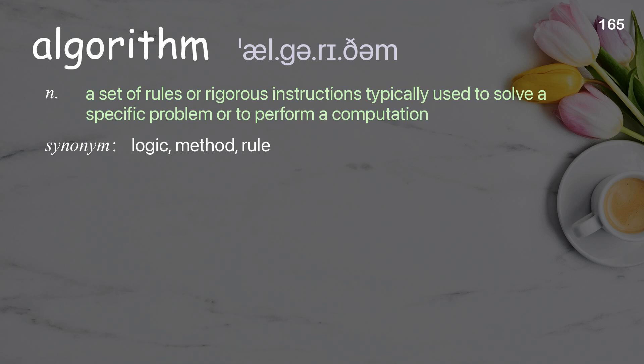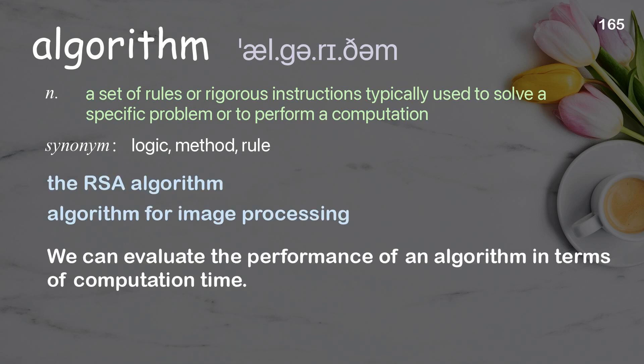Algorithm: a set of rules or rigorous instructions typically used to solve a specific problem or to perform a computation. Examples: the RSA algorithm; algorithm for image processing. We can evaluate the performance of an algorithm in terms of computation time.